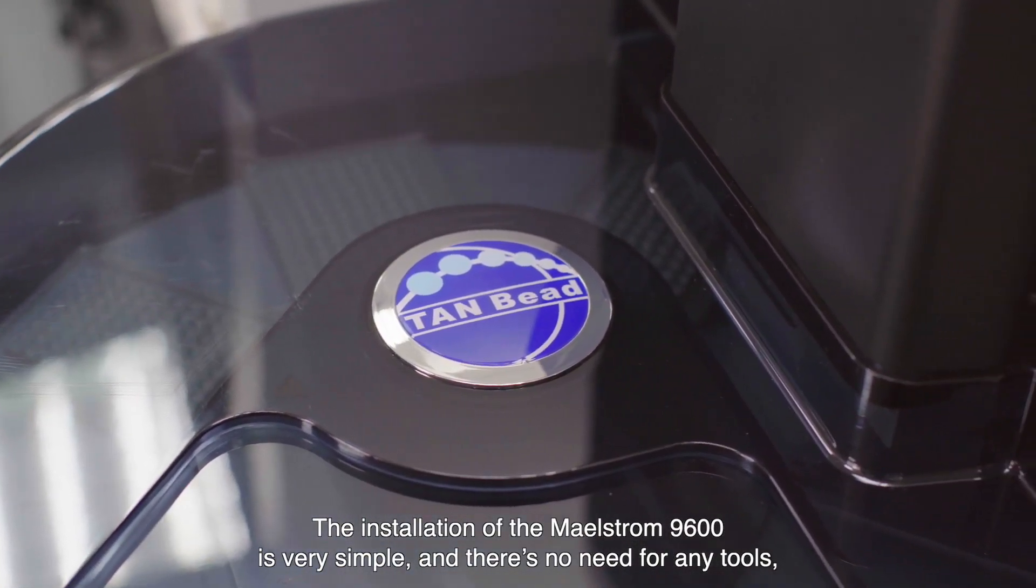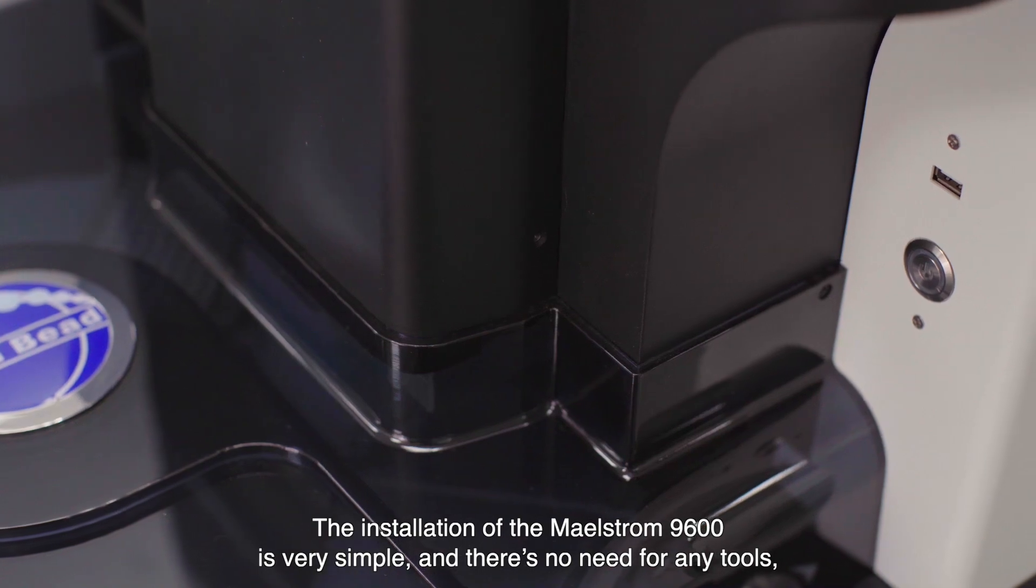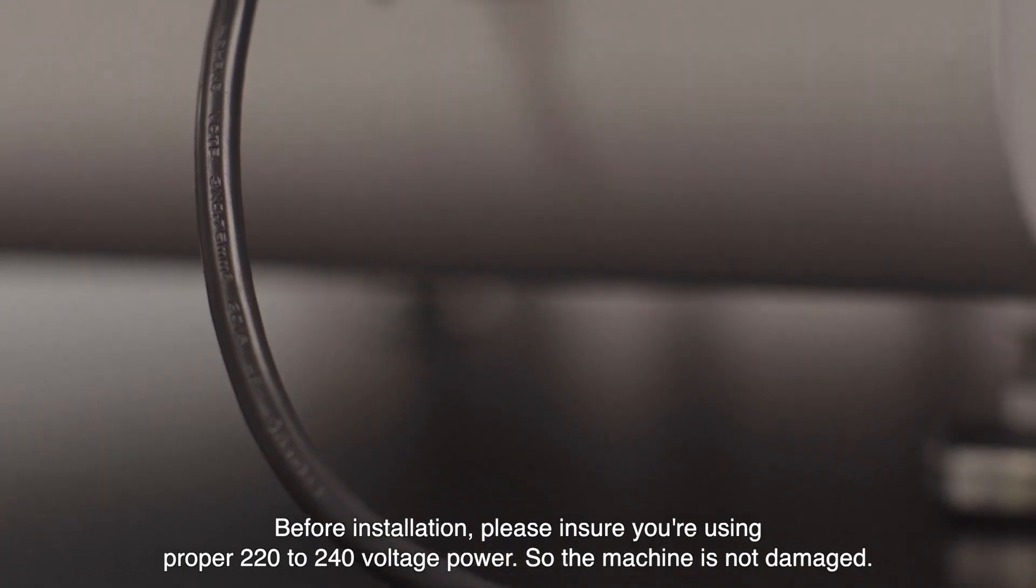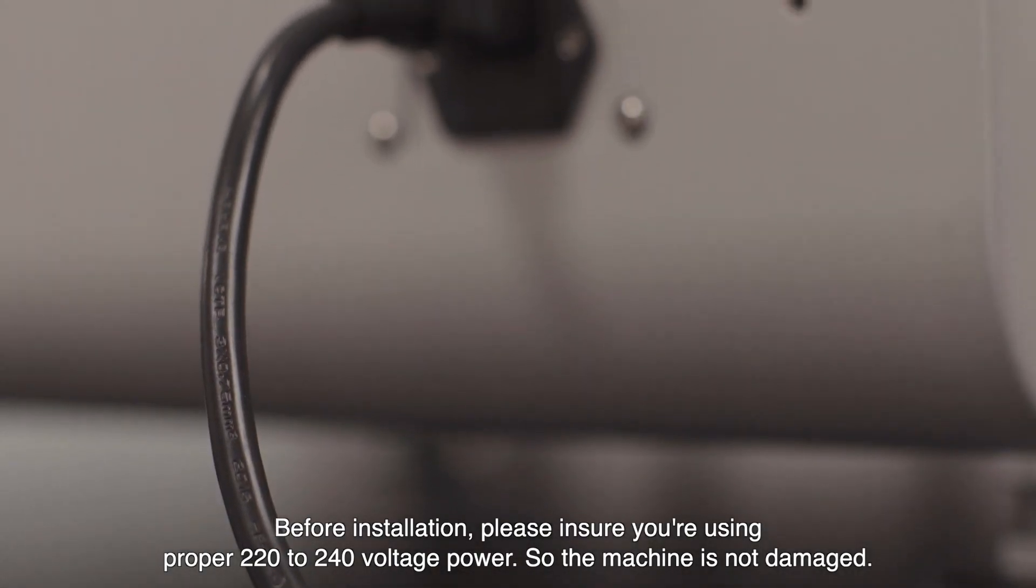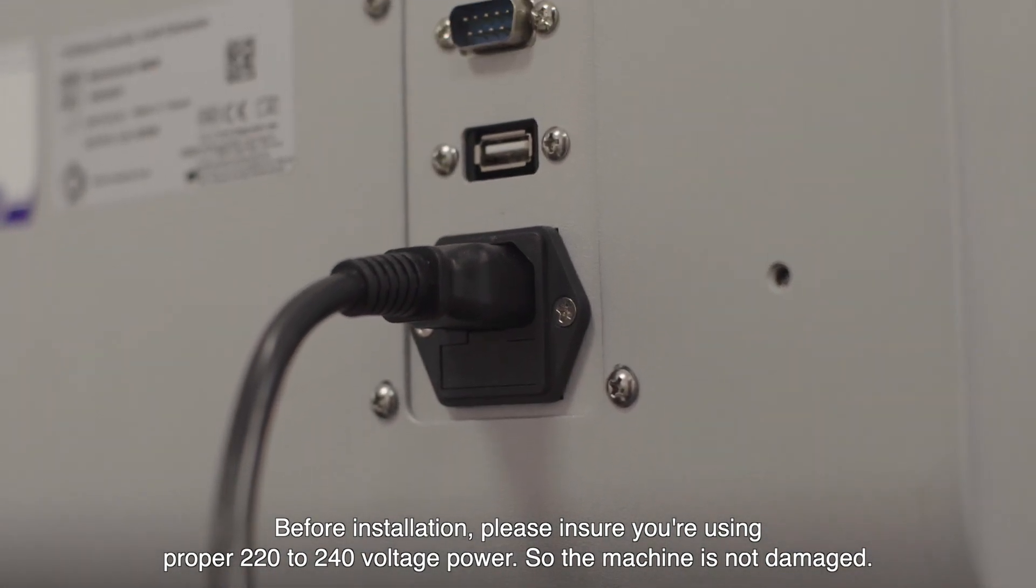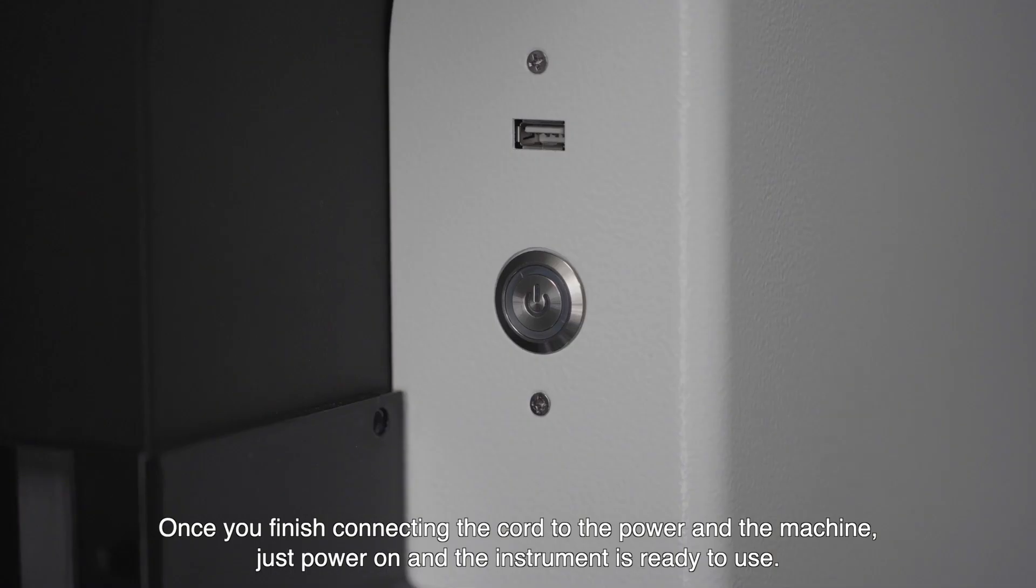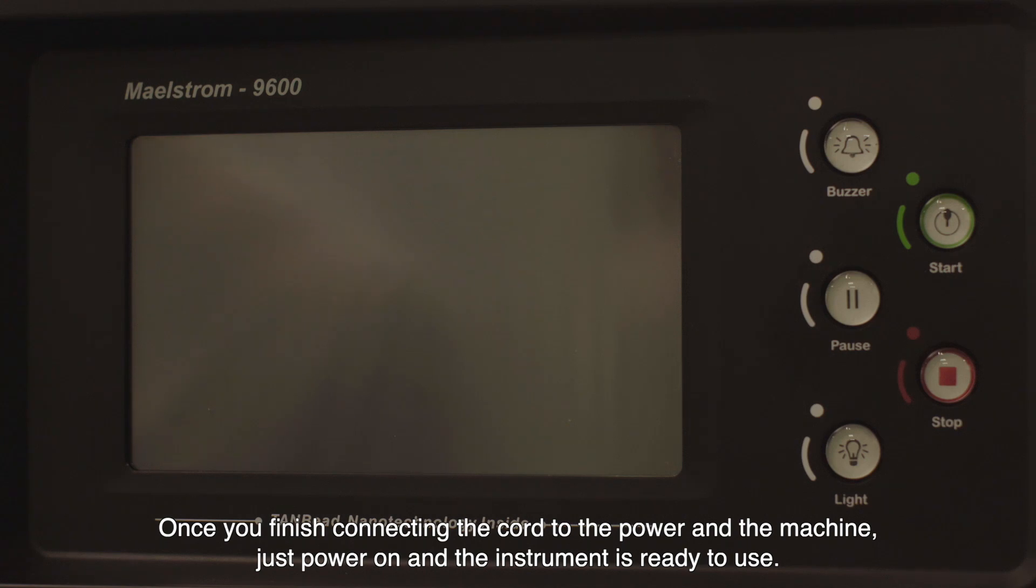The installation of the Maelstrom 9600 is very simple and there is no need for any tools. Before installation, please ensure you are using proper 220 to 240 voltage power so that the machine is not damaged. Once you finish connecting the cord to the power and the machine, just power on and the instrument is ready to use.